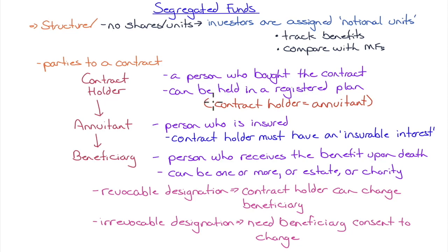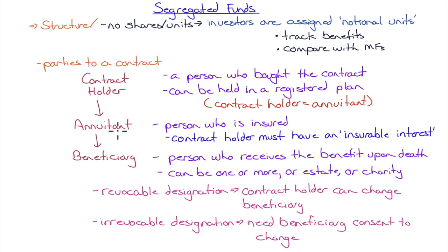The parties to a segregated fund contract: the contract holder is the person who bought the contract. If the fund is held in a registered plan, the contract holder is the annuitant. The annuitant is the person who is insured — the contract holder must have an insurable interest in the annuitant. You can be both the contract holder and annuitant, or the contract holder can insure a family member such as a son or spouse, but you cannot insure a random stranger you have no insurable interest in.